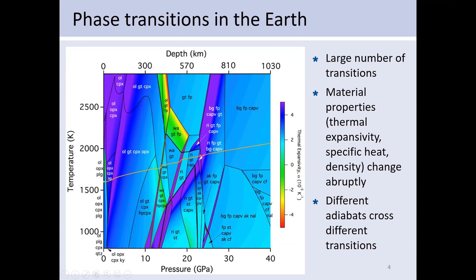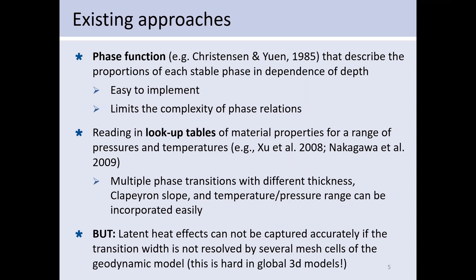This yellow line is the mantle adiabat for the present day average mantle. But if we move this up or down in temperature — for example in plumes, in slabs, or in the early Earth with a hotter temperature — it may cross completely different phases. So the type of phase transition present may change for different temperatures or at different times. This means the implementation in ASPECT has to be flexible enough to cover all of these cases.